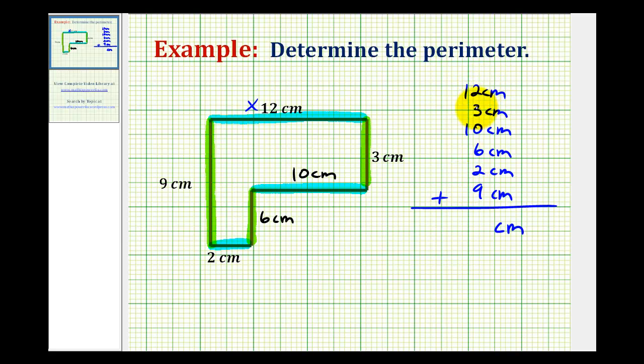2 plus 3 is 5, plus 6 is 11, plus 2 is 13, plus 9 would be 22, so we carry a 2. 2 plus 1 plus 1 would be 4, so the perimeter equals 42 centimeters.